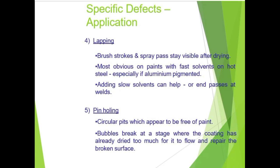Lapping occurs when brush strokes or spray overlap lines remain visible after drying, most obvious on paint which loses solvent fast on hot steel, especially if aluminium-pigmented. Adding slow solvent can help address this. Pin holing refers to circular pits which appear to be free of paint. If the correct venting procedure is not maintained, pin holing will occur. Bubbles break at a stage where the coating has already dried too much for it to flow and repair the broken surface. Incorrect mixing can also cause pin holing.